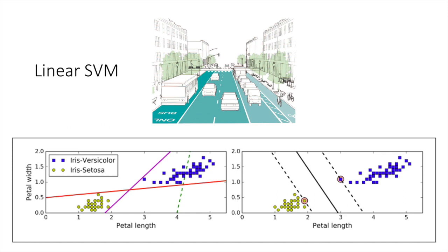Notice that adding more training instances off the street will not affect the decision boundary at all. It is fully determined or supported by the instances located on the edge of the street. These instances are called support vectors and they are circled in this figure.